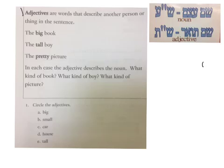So a Sheyem To'ar would be, for example, in English, the big book. So the book would be the noun, the Sheyem Etsem, and big is a description, so big would be the Sheyem To'ar.